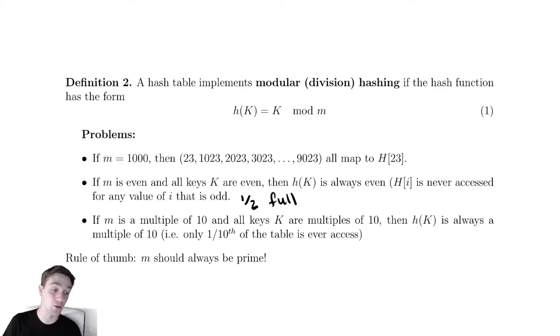Our next problem that occurs is if this goes even worse, and let's say that your m is a multiple of 10, and all of your keys are also multiples of 10, then every single computation will result in a multiple of 10, which means you're only using one-tenth of the elements of the table. So this is clearly a potential problem that we might need to contend with. One way to get around these last two problems is to always make m a prime number.